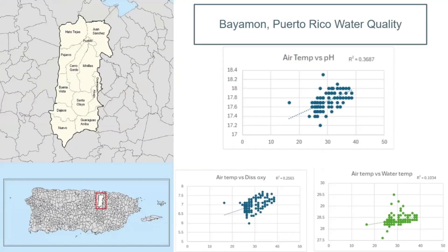This is the water quality site. The air temperature seems to have a high correlation with pH and also with water temperature. But again, with dissolved oxygen, the correlation is really low compared to the others.